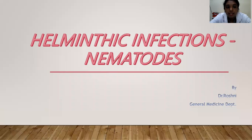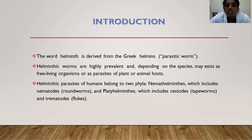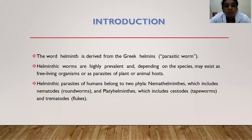Good morning everyone. Today I will be talking about helminthic infections, especially about nematodes. The word helminth is derived from the Greek word meaning parasitic worm. Helminthic worms are highly prevalent and depending on the species may exist as free-living organisms or as parasites of plant or animal hosts. Helminthic parasites of humans belong to two phyla: Nemathelminthes and Platyhelminthes. Nemathelminthes includes nematodes, that is roundworms. Platyhelminthes includes cestodes and trematodes.